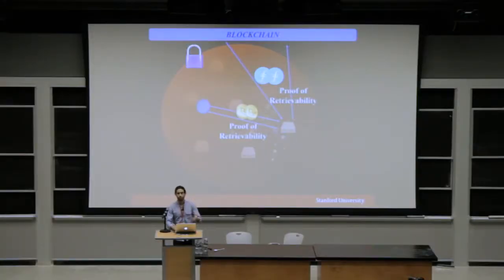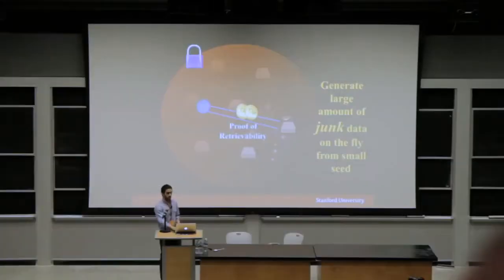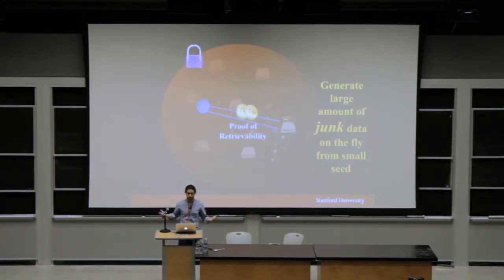The problem is proofs of retrievability alone really would not be at all a good proof of work. The problem is that retrievability just means that you can retrieve some data. If you know the data yourself, you can generate a large amount of junk data on the fly from some small seed, you store that small seed, and then you can prove that you can retrieve a gigabyte of data, but that data just might be random junk. So it's not a restricting resource, and it's not useful for a proof of work for a blockchain.